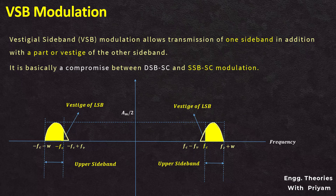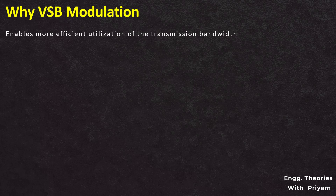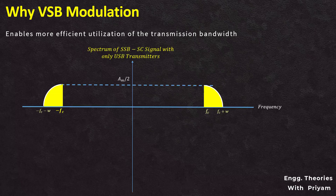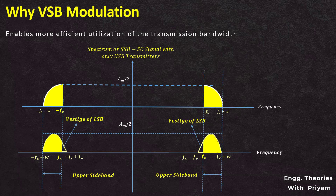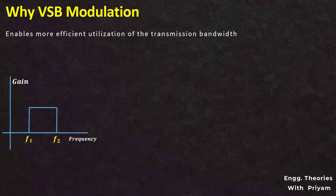Let us understand why we need VSB modulation. There are two main reasons. Firstly, it enables more efficient utilization of transmission bandwidth. Unlike SSB modulation, which transmits the entire sideband containing only half of the information, VSB modulation only transmits a portion of the sideband, thereby freeing up valuable bandwidth for other signals. Bandwidth conservation is one of the key advantages of VSB modulation.